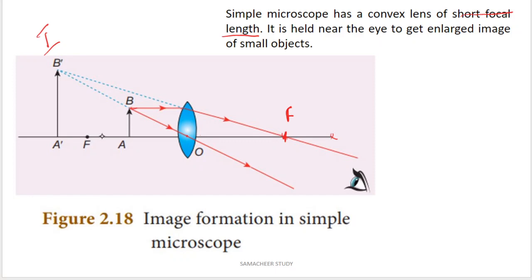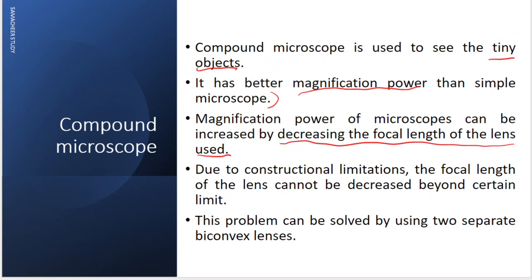If the focal length is reduced, the object will appear reduced. But practically, it is very difficult to decrease the focal length. That is why decreasing the focal length has its limitations.